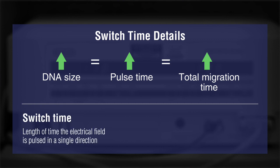The switch time is the length of time that the electrical field is pulsed in a single direction. For example, a 10 second switch time means that the electrical field will be pulsed in one direction for 10 seconds and then switched to another direction for 10 seconds.